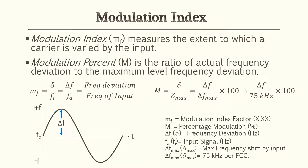The first term we'll go over is modulation index — it's the measure of the extent to which a carrier is varied by the input. It's usually found inside the frequency modulation equation and is very easily spotted. It's found by the actual frequency deviation divided by the input frequency. The other term is modulation percent — it's the ratio of the actual frequency deviation to the maximum frequency deviation, which for FM is 75 kilohertz. This is expressed as a percentage, always multiplied by 100.